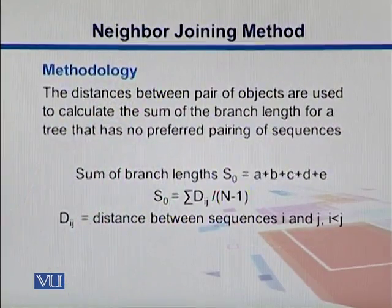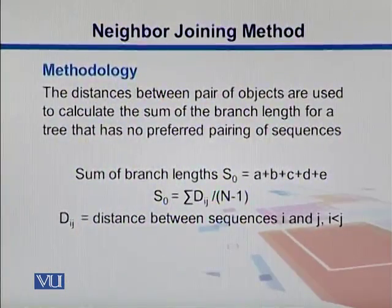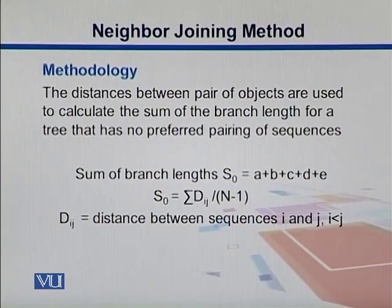Here is the overall methodology. The distances between pairs of objects are used to calculate the sum of the branch lengths for a tree that has no preferred pairing of sequences. The sum of branch lengths is given by S0, which equals A plus B plus C plus D plus E. It's the summation over all branch lengths.